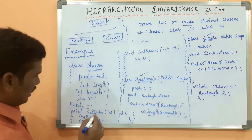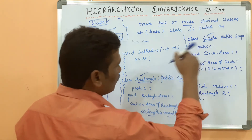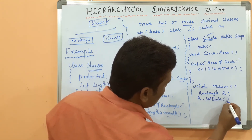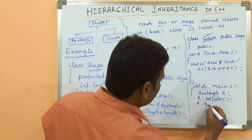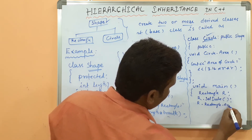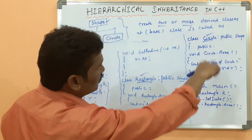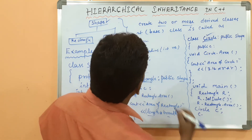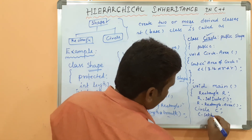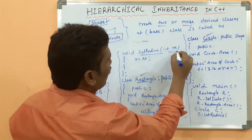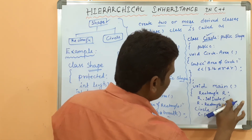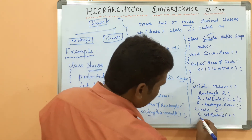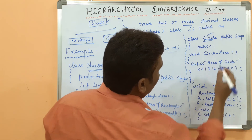In main, you create an object for the rectangle class — no need to create an object for shape. Call R.setData() to pass the length and breadth required to find the area of the rectangle. Then call R.rectangleArea(). After that, create an object C for the circle class. Call C.setRadius() with one argument, then call C.circleArea().